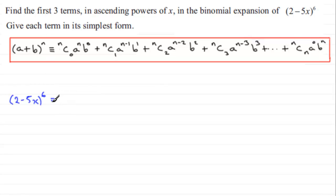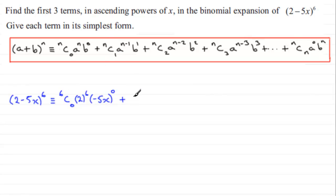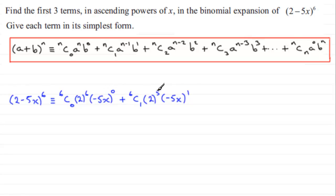This is identical then to: 6C0 times 2 to the power 6 times (minus 5x) to the power 0 — do put the b part in brackets because it's negative. The second term is 6C1 times 2 to the power 5 times (minus 5x) to the power 1. Notice that the powers on a decrease while the powers on b increase from 0 — these two powers always add up to n. 6 and 0 add up to 6, and 5 and 1 add up to 6. This is always a good check.